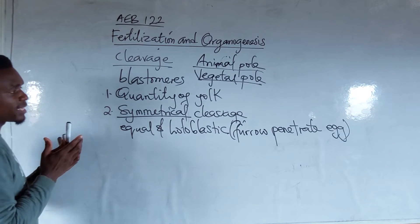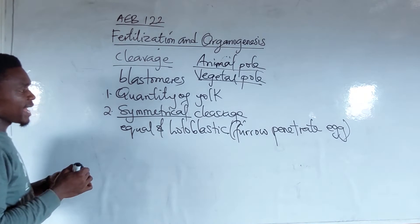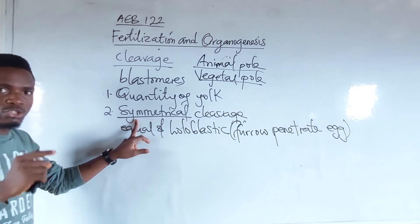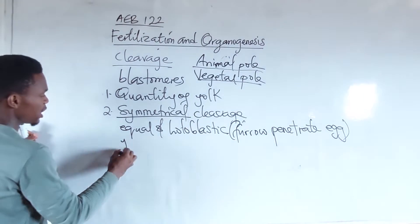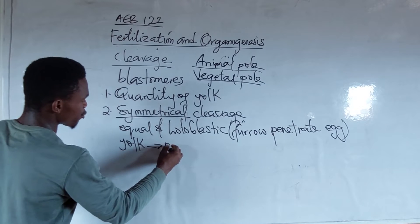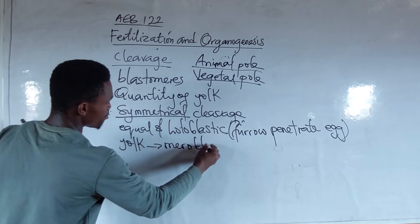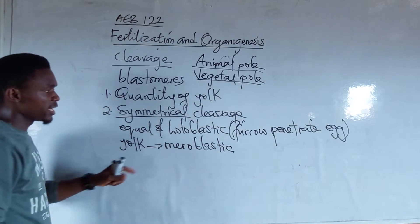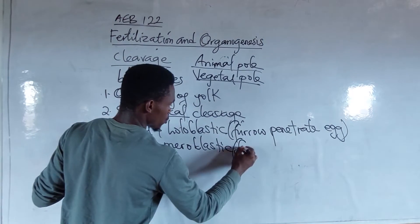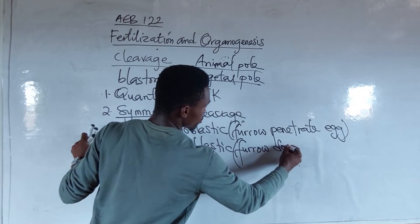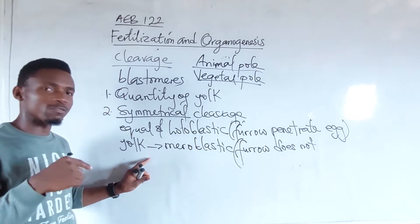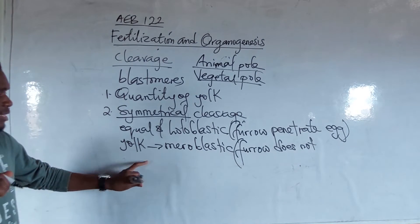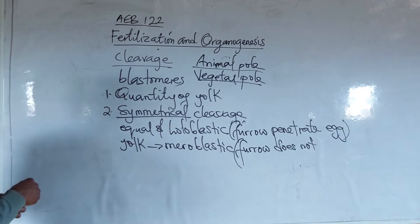The part of the egg that has little or no yolk undergoes symmetrical cleavage. But the one that has a lot of yolk is meroblastic. The word meroblastic means the furrow does not penetrate the egg, because there is a lot of yolk present in the egg.